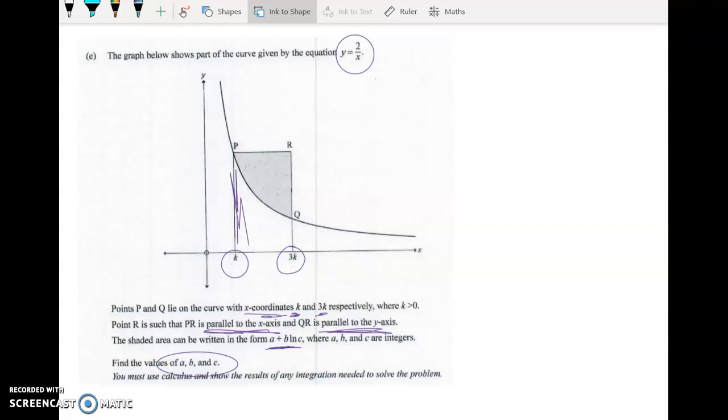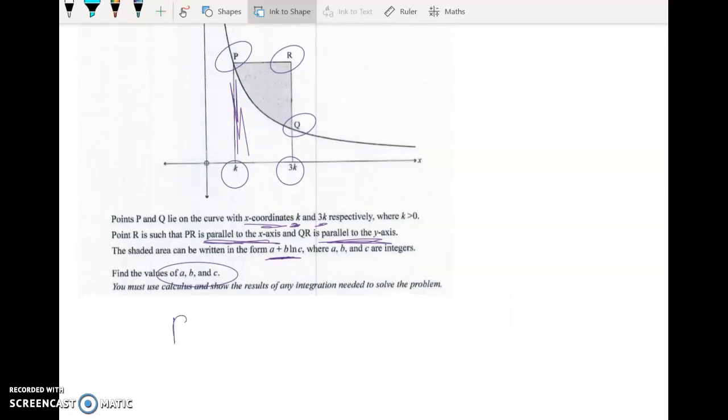So the next thing that I'm going to do is I'm going to find the coordinates of P, R, and Q. So P has got an x-coordinate of k, y in this example is 2 over x. So the y-value here is going to be 2 over k.